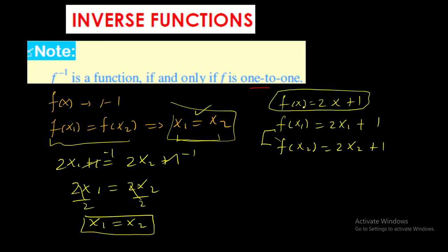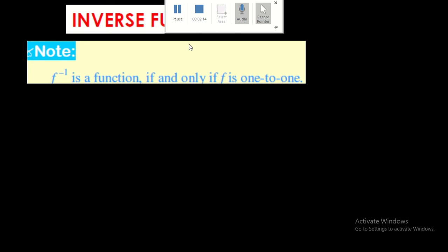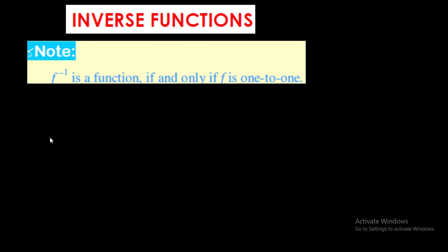So the inverse of this function will also be a function. The key point is: for the inverse of a function to be a function, the original function has to be one-to-one. The other method to check whether a function is one-to-one or not is graphically.